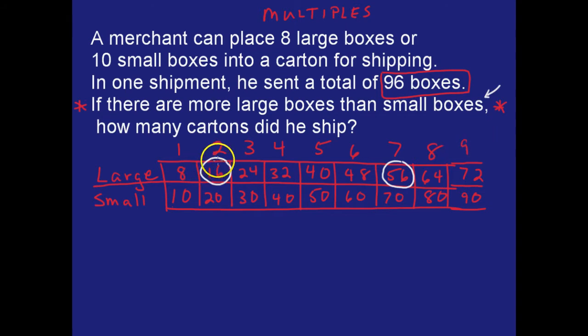If it were 16, the corresponding number would have to be 80. There would be far more small boxes than large boxes, and that's opposite of what the riddle says. The riddle says that there needs to be more large boxes than small boxes.